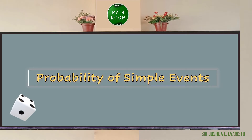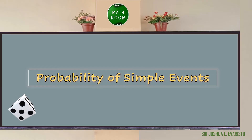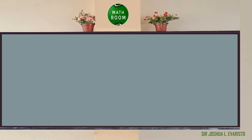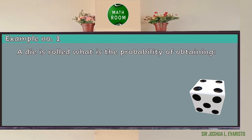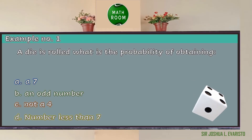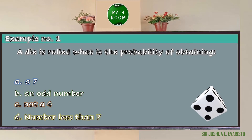Let us now solve examples of probability of simple events. Example number 1: A die is rolled. What is the probability of obtaining a 7? An odd number? Not a 4? A number less than 7?